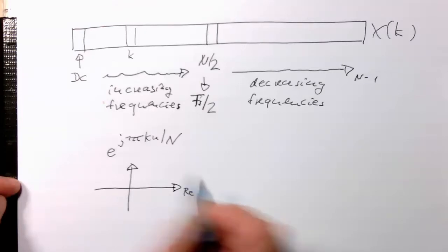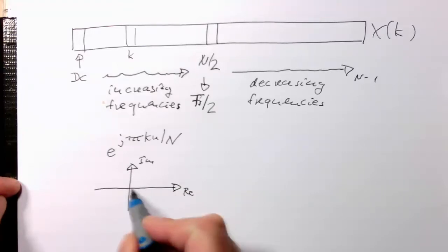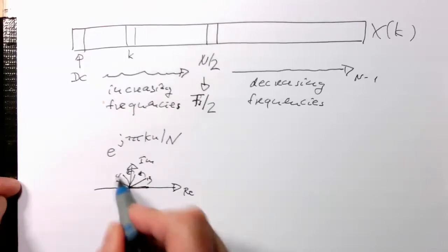That's our real part. That's our imaginary part. We can imagine, depending on the k, this phasor jumps from here to that point, then to that, then to that, then to that. So it rotates around here.